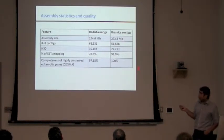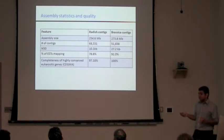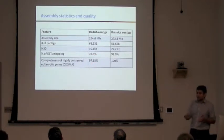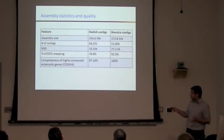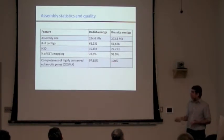The good thing about the Brassica assembly is that they also have scaffolds, which increases the length considerably. Even though we have only 254 MB of sequence, we could map about 80% of the ESTs from Radish back onto the assembly. When looking at highly conserved eukaryotic genes — conserved from yeast to humans — there are about 250 such genes in this dataset, and 97% of them were present in Raphanus with a high degree of coverage. So we were able to sample the genic space quite extensively despite the low sequencing coverage.